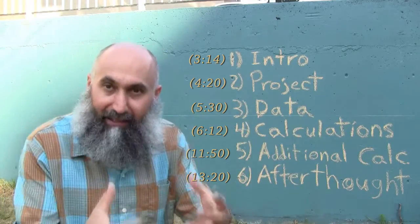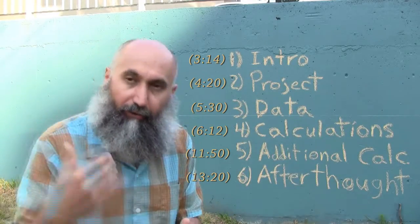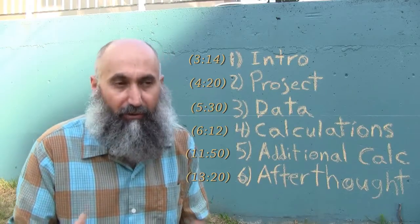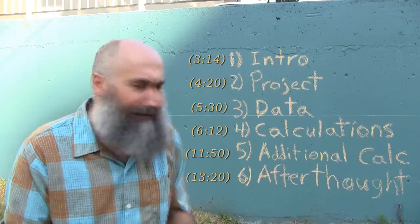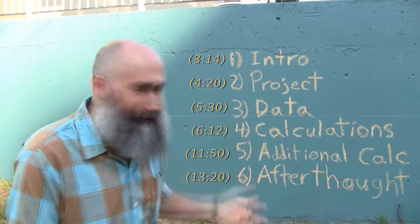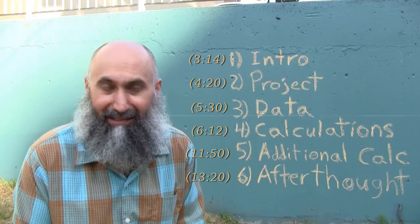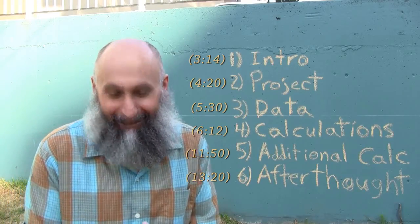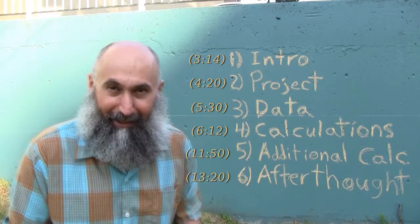Part four is the meat of this video — going through the calculations, using ratios to manage my time and my project. We end up using a few different techniques: cross-multiplication, and the most basic operations in mathematics — multiplication, division, addition, and subtraction.